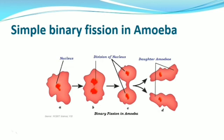Let us see how binary fission occurs in Amoeba. As Amoeba is an irregular-shaped organism, the plane of division is very hard to observe. During binary fission in Amoeba, the contractile vacuole stops its function and disappears. The nucleolus gets disintegrated. The nucleus then divides mitotically and the cell constricts in the middle so that the cytoplasm divides to form two daughter cells.